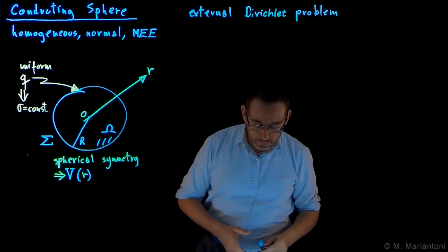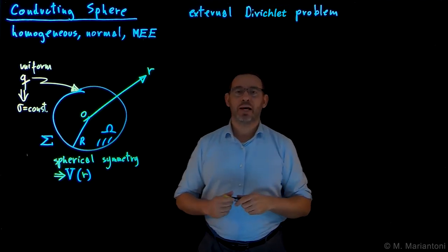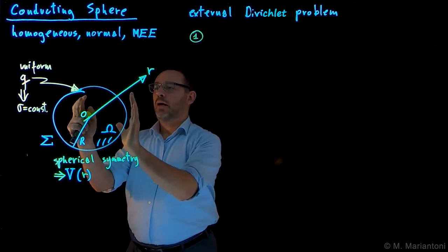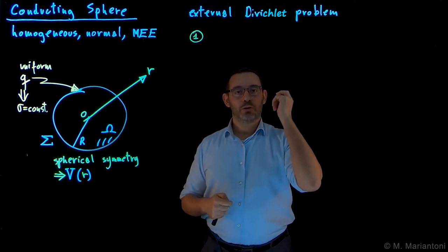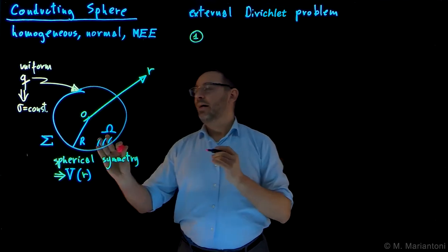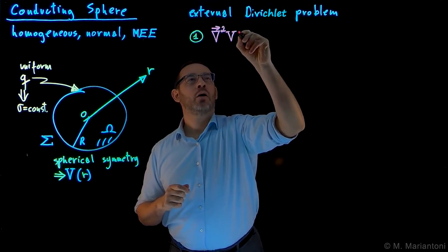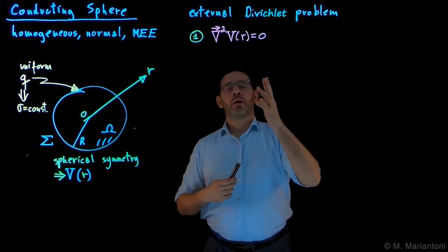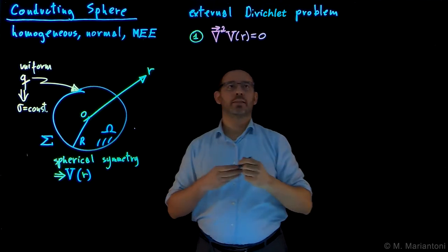We already discussed the external Dirichlet problem in a previous video, so let us follow the procedure outlined there. Step one: we have a region with a bulk where the conductor exists, and we have vacuum outside the conductor all the way to infinity. The first thing we use is the Laplace equation in vacuum. We write the scalar Laplace equation of V, only a function of r, equal to zero, because in vacuum we have no charge distribution. The spherical representation of the scalar Laplace equation is 1 over r squared, times the total derivative with respect to r, of r squared times the total derivative with respect to r of V(r), equals zero.